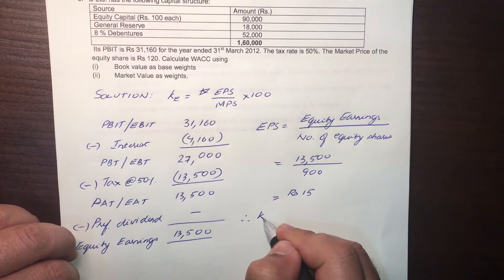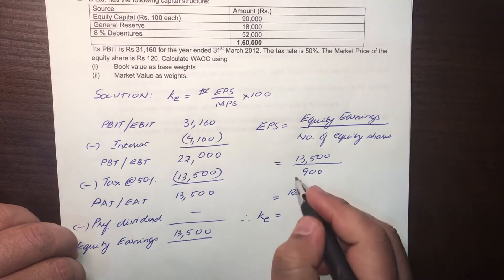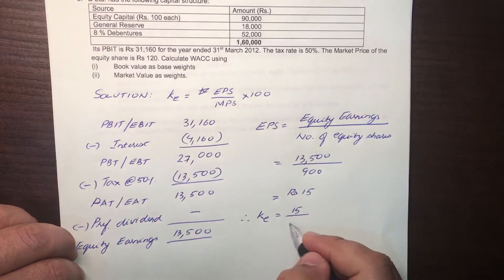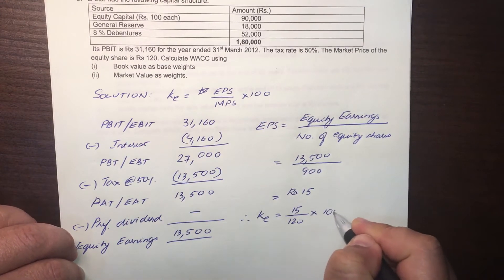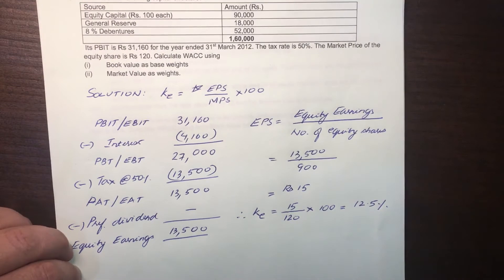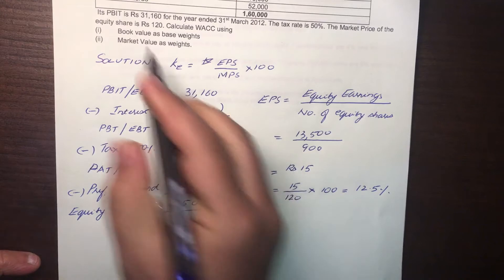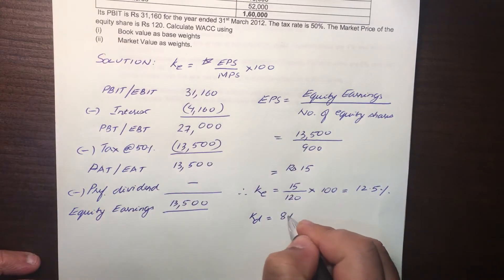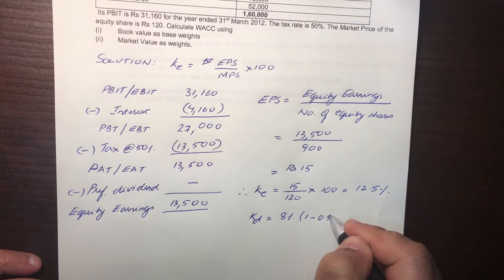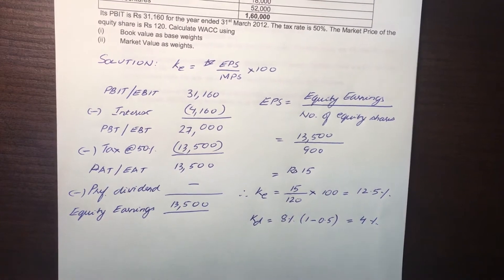Therefore, the cost of equity (KE) is EPS of 15 divided by the market price per share of 120, multiplied by 100 — that is 12.5%. Now, KD is 8%. We always make the tax adjustment for after-tax cost. The tax rate is 0.5, so KD is 4%.